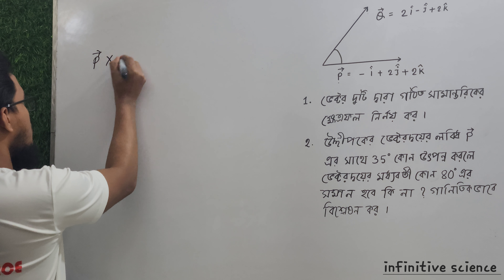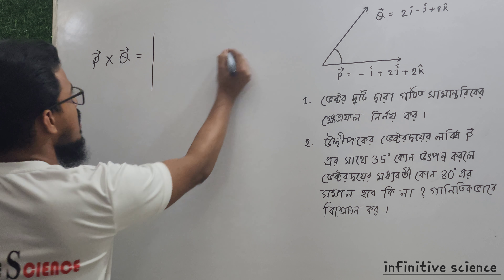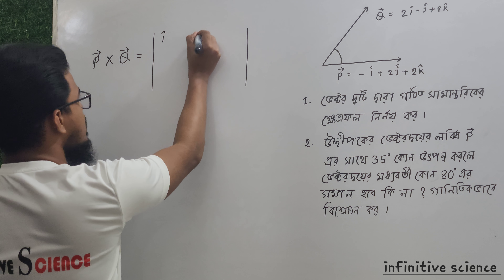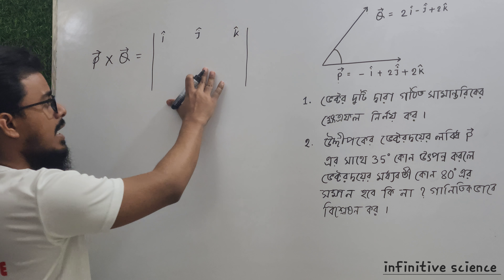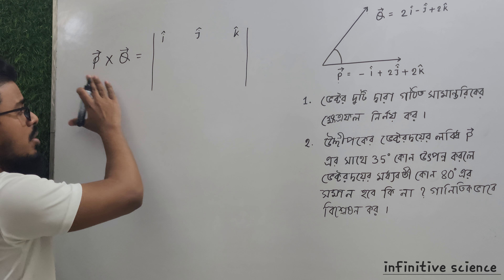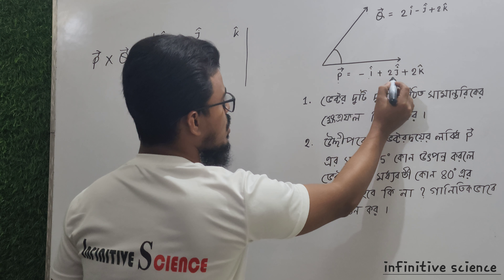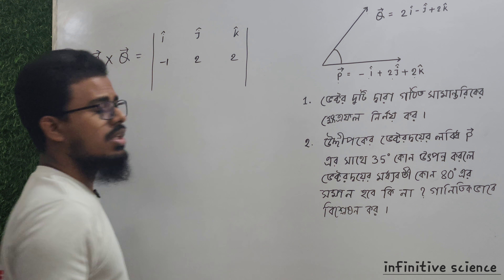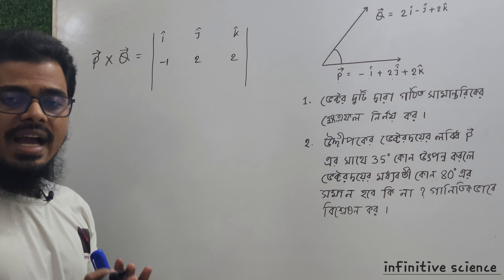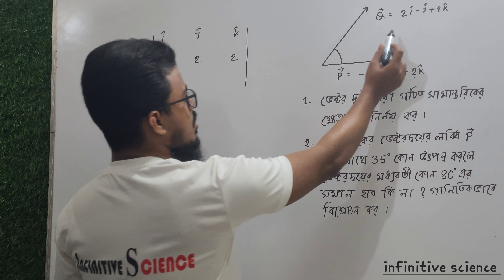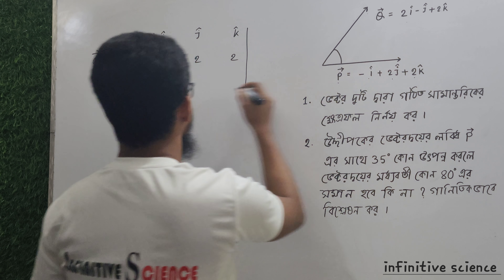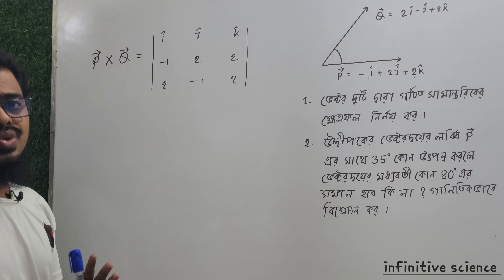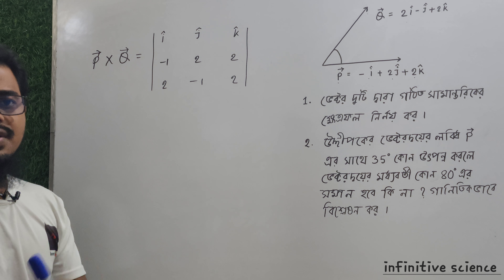Coming back to the calculation, we have the P vector with components minus one, two, two and the Q vector with components minus one, two, one. These are the vector components we will be working with. The class of this vector setup is key to solving the problem.